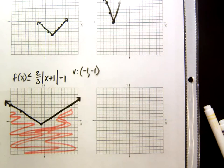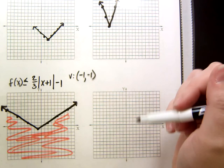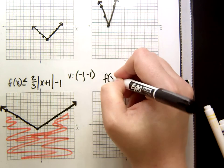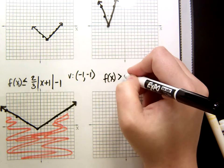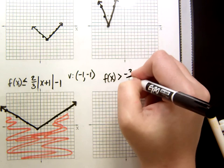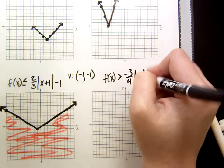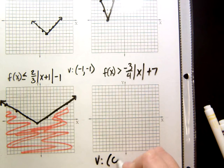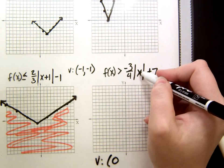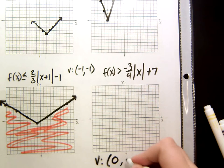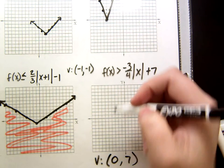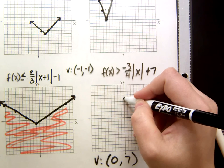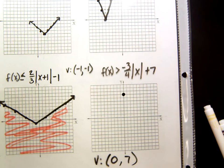Now, one more example, because I haven't shown you any that had a negative a value yet. So, let's take f of x is greater than negative 3 fourths absolute value of x plus 7. My vertex on this one is 0, because there's no number added or subtracted inside the absolute value. And then 7 on the outside. So, 0, 7, 1, 2, 3, 4, 5, 6, 7. There we go. That's my vertex.